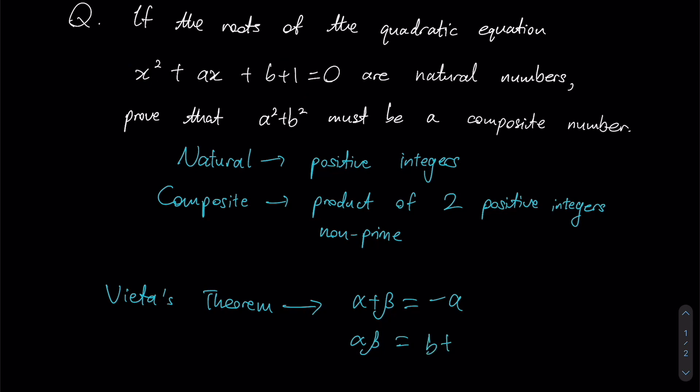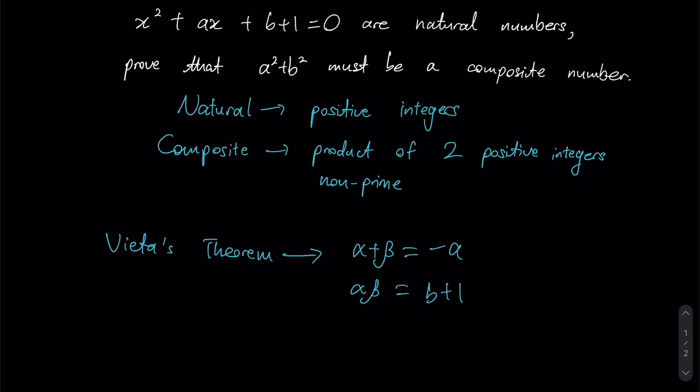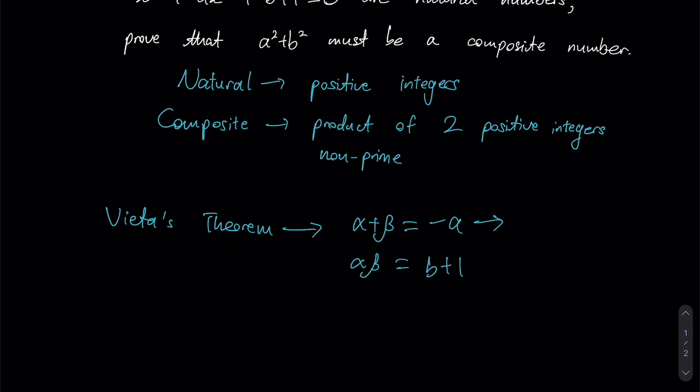Given that the expression we want to prove is of the form a² + b², it might be a good idea to make a and b the subject of the formula such that a is negative alpha plus beta, and b is alpha beta minus 1.